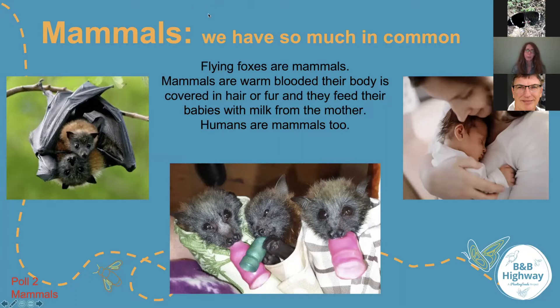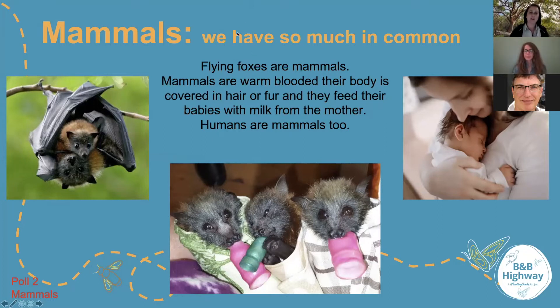Amazingly, flying foxes are mammals just like us — warm-blooded, covered in hair, and they feed milk from their mother, just like we do. It's amazing how much we actually have in common. It's incredible to think that here in Australia the variety of pollinators includes mammals like the flying fox. We actually have a poll here about mammals — let's find out what our participants know about mammals.